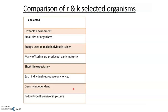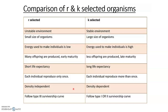Comparing R and K selected organisms: R-selected species can be in unstable environments, are small in size, use low energy to make individuals, produce many offspring, reach early maturity, have short life expectancy, each individual reproduces only once, are density independent, and follow a Type 3 survivorship curve. K-selected species live in stable environments, are larger in size, use high energy to make individuals, produce fewer offspring, reach late maturity, have long life expectancy, individuals reproduce more than once, are density dependent, and follow a Type 1 or Type 2 survivorship curve.